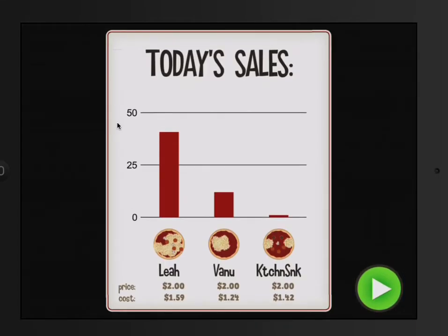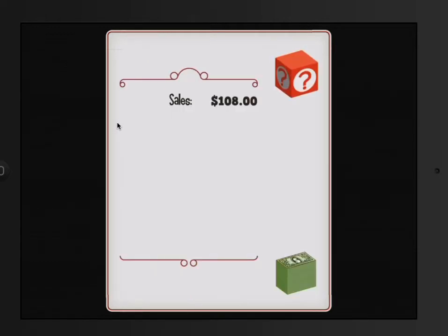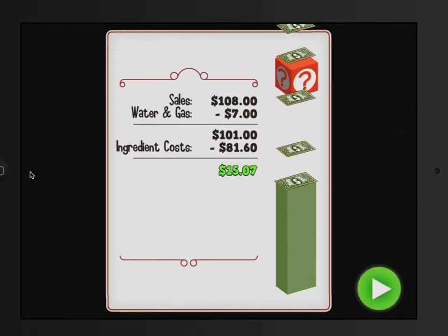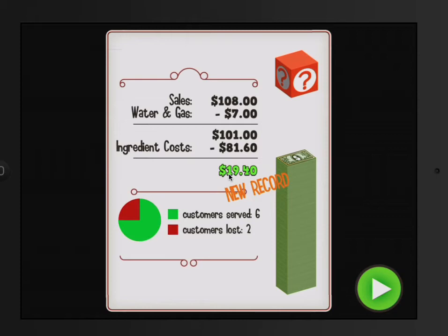Which pizza sold the most this week? Leah's. Which one sold the least? The kitchen sink. Maybe we need to change and add more. What did they ask for? More olives. Here's our sales for the day — our profit went up, it's a new record! This game requires you to use a lot of brain power, and you have to learn your math facts and make lots of decisions.